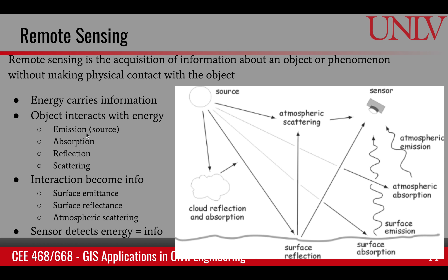Emission is where the object has its own energy and is emitting energy. But other processes or interactions can be absorption, reflection, or scattering. This interaction becomes a change in the energy — it becomes information in the energy — for example, in the form of emittance, reflectance, or scattering.